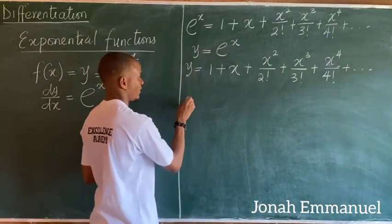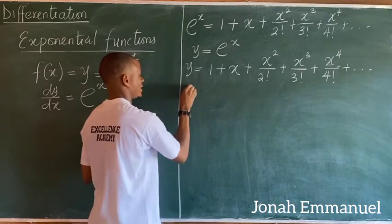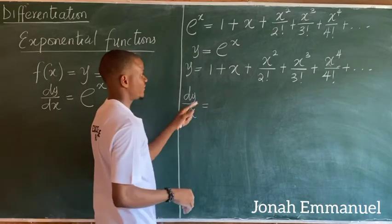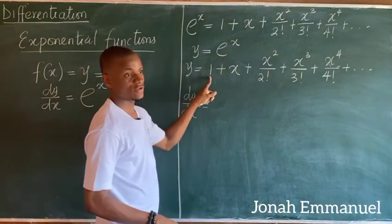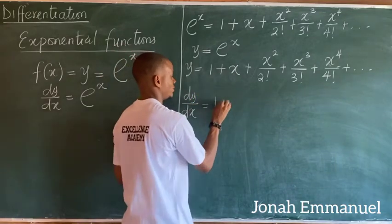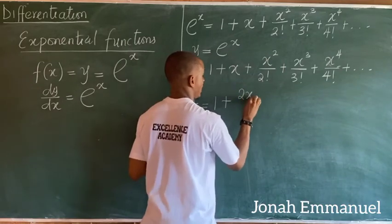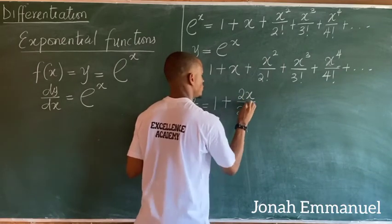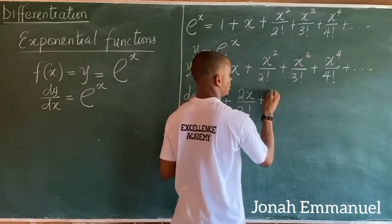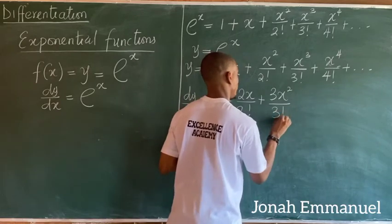If I differentiate this now — differentiating y with respect to x — I will have dy/dx equal to: differentiating 1 (a constant) gives 0, so it drops off. Differentiating x gives 1; differentiating x² gives 2x over 2 factorial; differentiating x³ gives 3x² over 3 factorial.